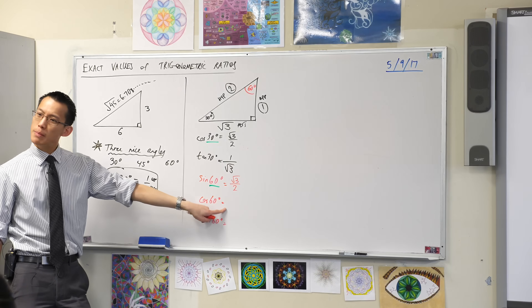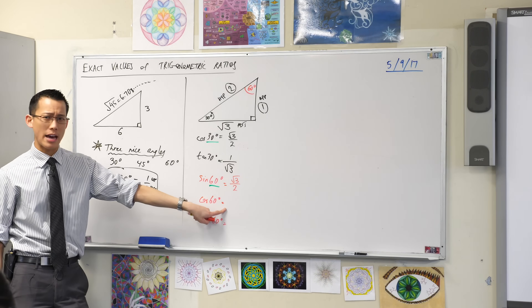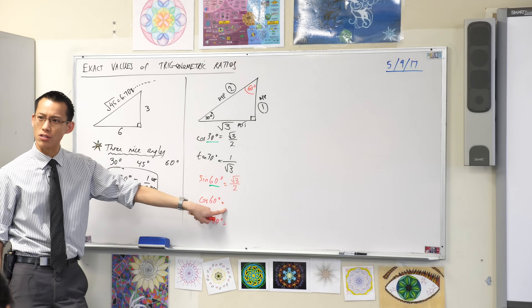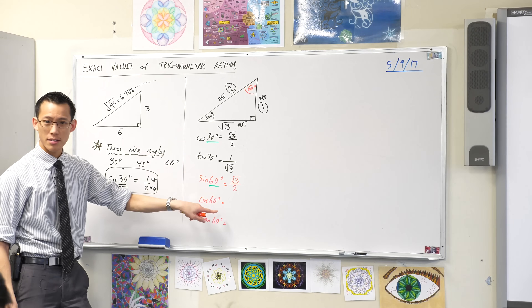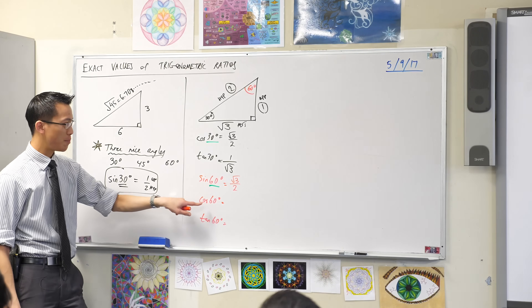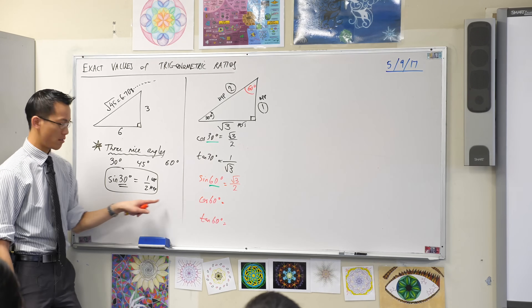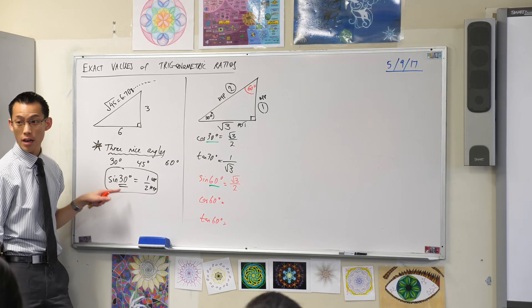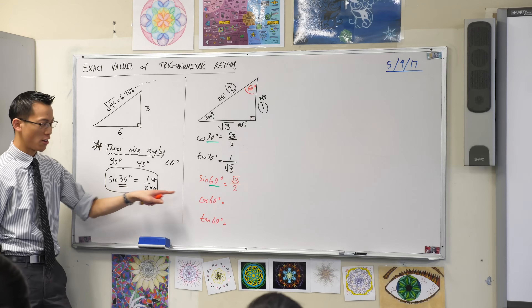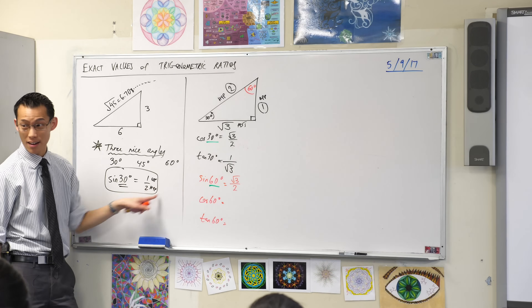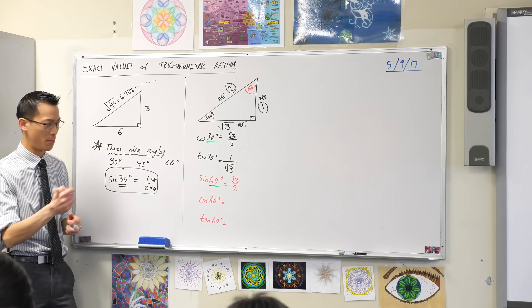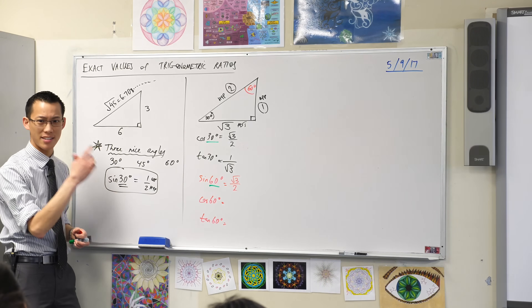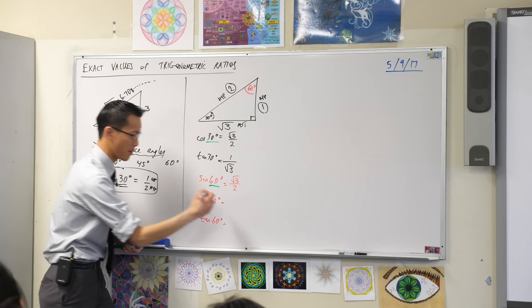By that logic, you should be able to tell me what this is without even looking at the triangle, right? What's the complement of cos 60? It should be sine 30 — 30 and 60 are complements.